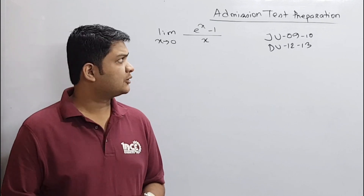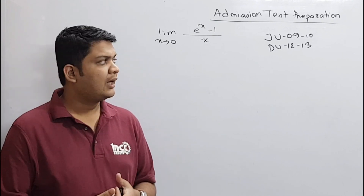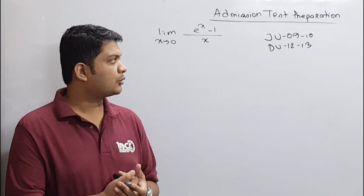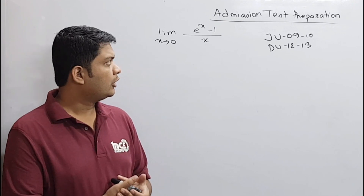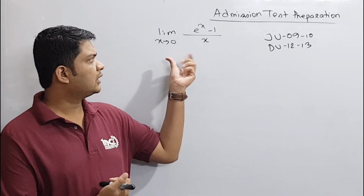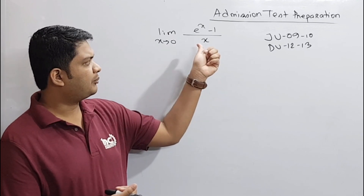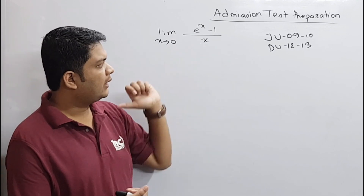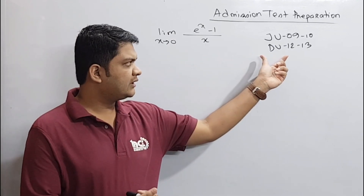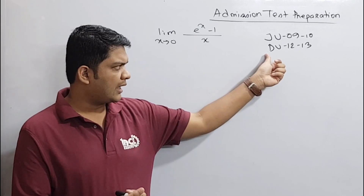Hello everyone, welcome to the Ambition Test Preparation tutorial. Now we will solve some problems. One question is: limit x tends to 0 of 2x minus x divided by x. This question appeared in 2009 and 2012.